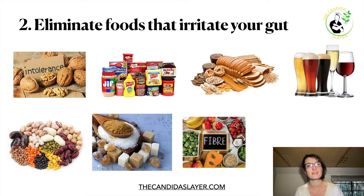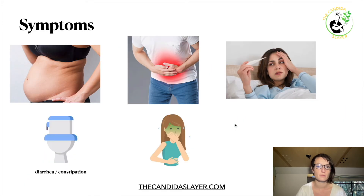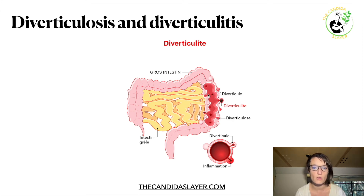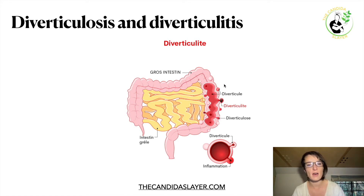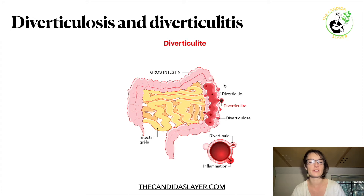Number two: eliminate foods that irritate your gut. You have diverticulitis because your colon membrane is inflamed and irritated — from accumulation of stool putting pressure in your colon, from dry stool, and from a diet that doesn't provide the right nutrients. What is inflammation? Inflammation is actually how your body repairs itself. So inflammation is not a problem — the problem is what causes the inflammation.